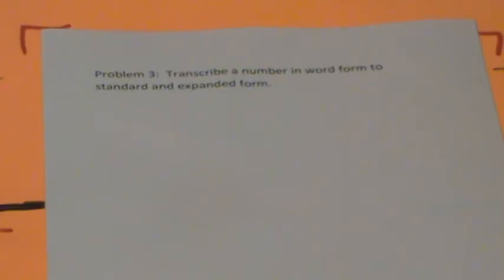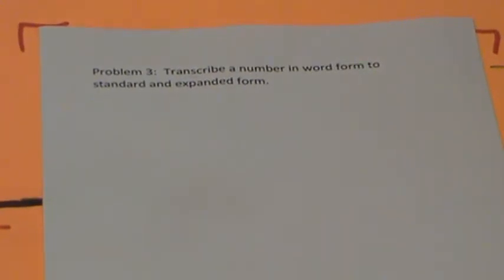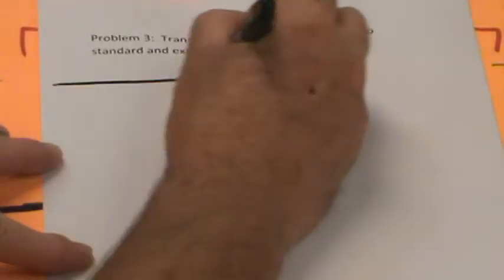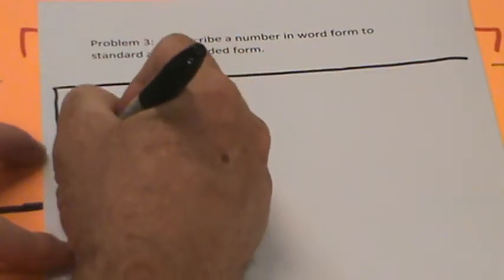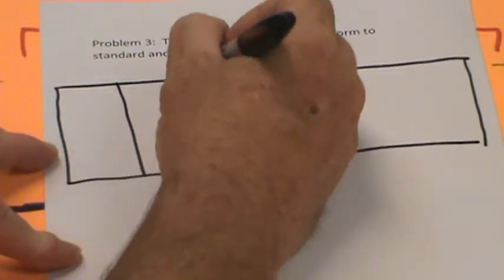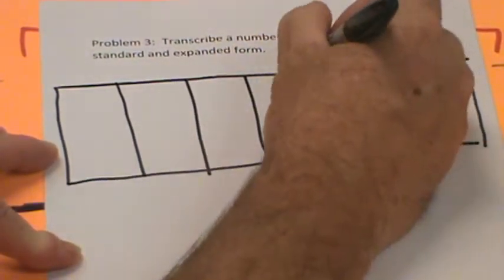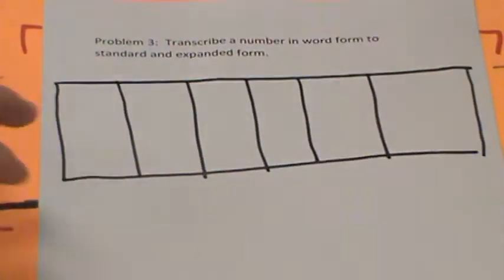This is problem three. It says transcribe a number in word form to standard and expanded form. We're going to do this in standard and expanded form. Let's make that place value chart — this one is going to have six spaces: one, two, three, four, five, and six.